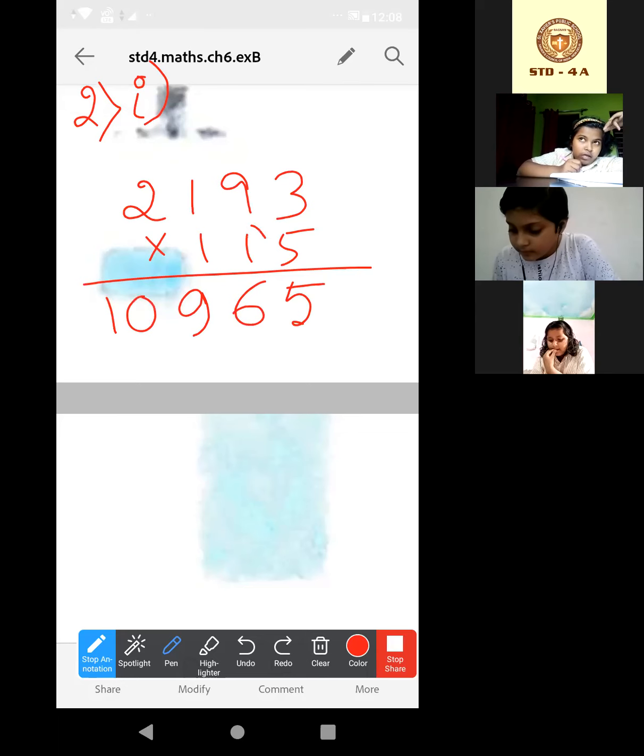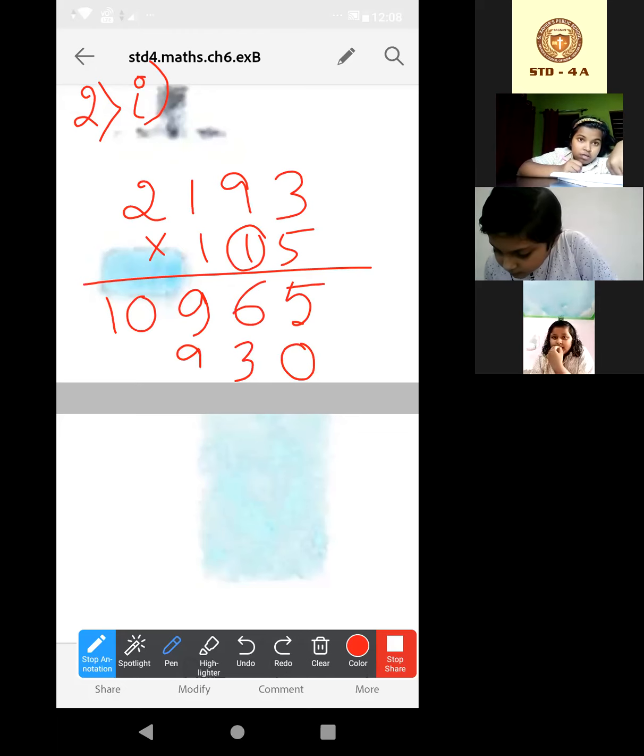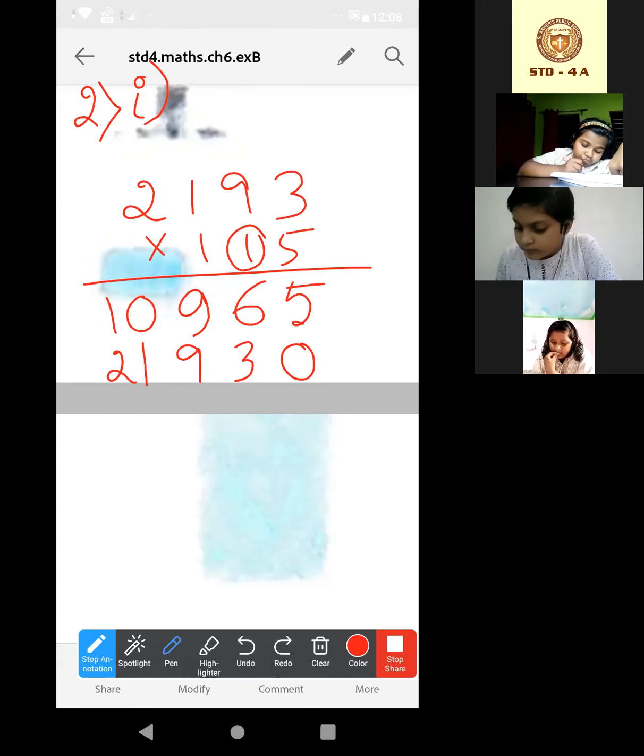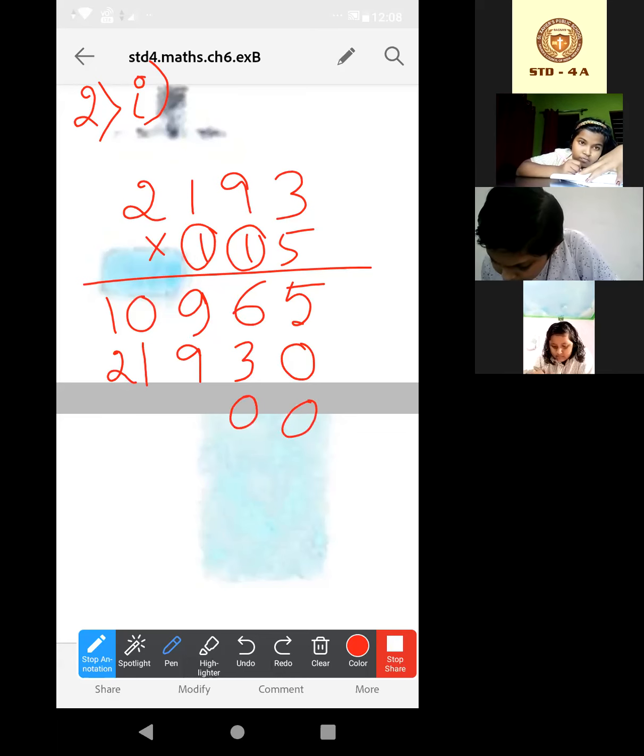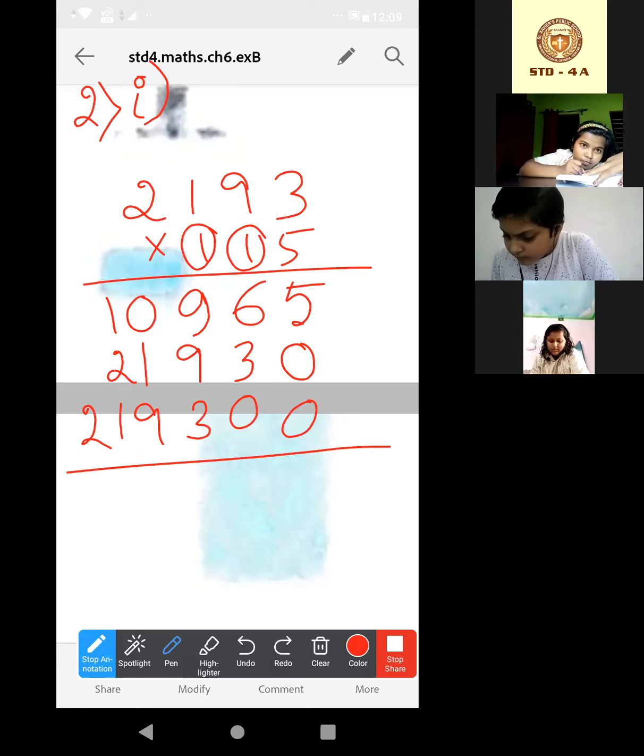Now, by this one. So 1's place digit will be 0. Now, 3 times 1 is 3, 1 times 9 is 9, 1 times 1 is 1, 1 times 2 is 2. Okay? Now, the next one. By again 1. This one. 2, 0 will be there as it is in 100 place. 1's place and 10's place digit will be 0. Now, the same number will come. 2,193. Now, do the addition.